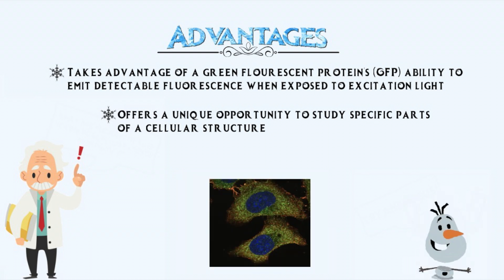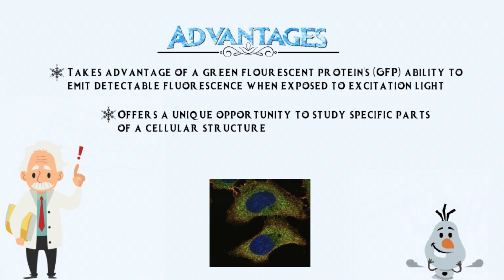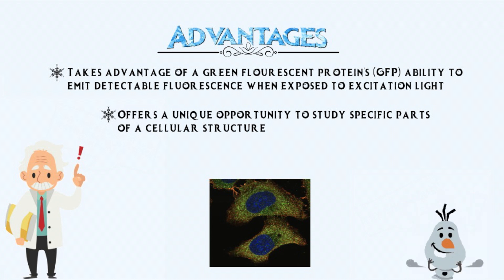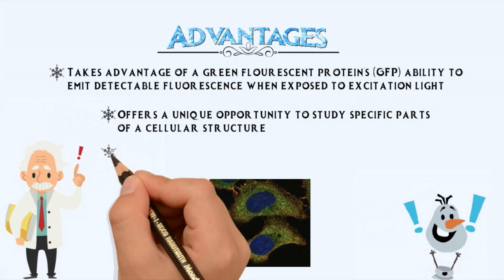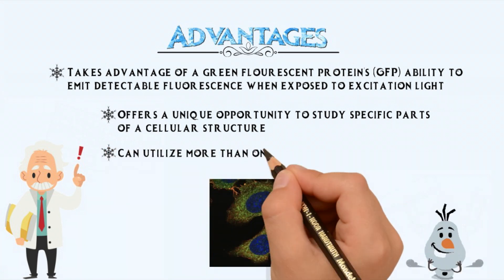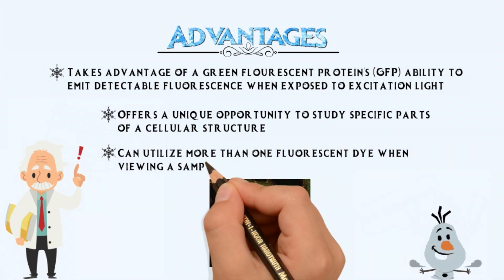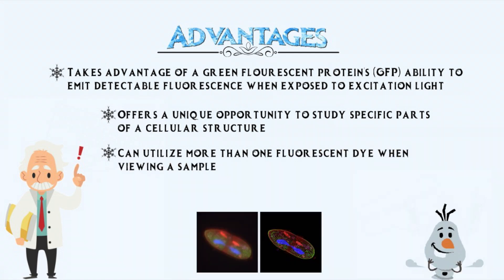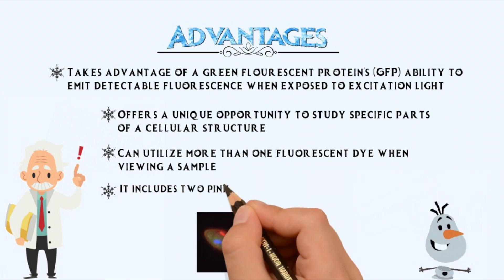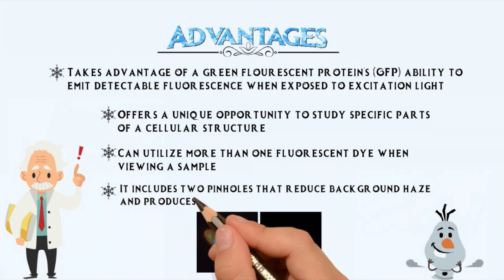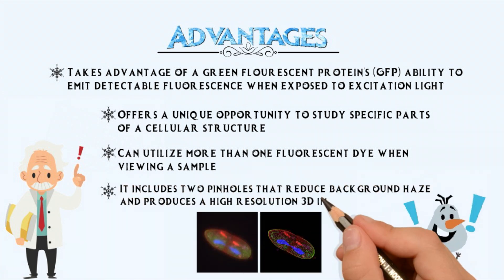CFM offers a unique opportunity to study specific parts of a cellular structure. Through the use of GFP, high-resolution structures can be obtained on the cellular level of an organism by switching the excitation light, allowing different parts of the specimen to be distinguished unlike with other techniques. CFM can also utilize more than one fluorescent dye when viewing a sample. Together, the confocal microscope's two pinholes significantly reduce the background haze that is typical of a conventional fluorescence image.